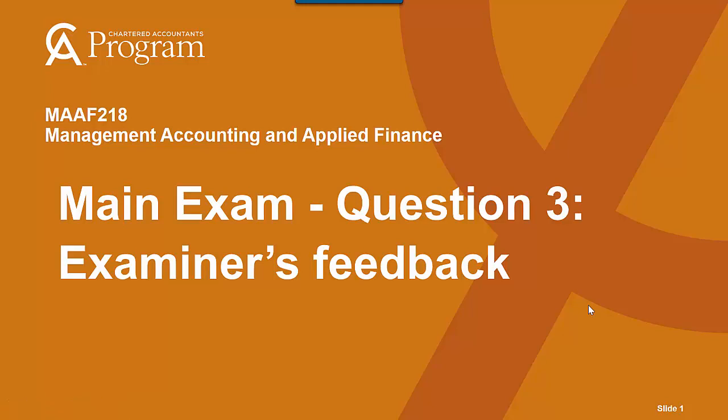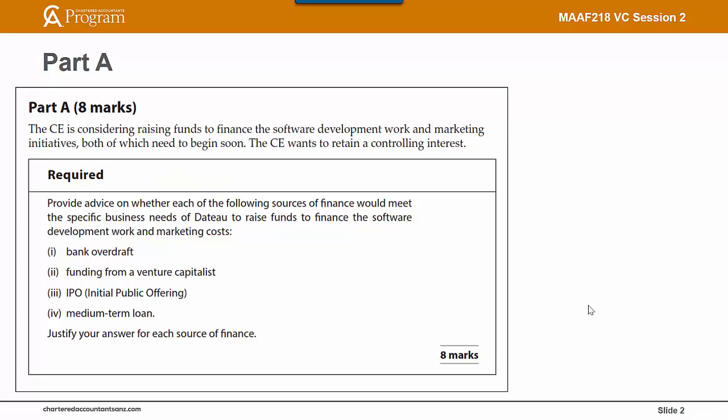In this video, we will be providing feedback to question 3 of the MAF main exam. Part A of question 3 asked candidates to provide advice on whether each of the following sources of finance would meet the specific business needs of DATO to raise funds to finance the software development work and marketing costs.